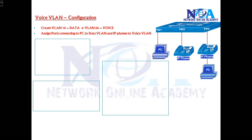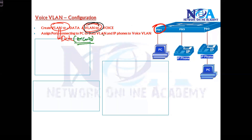To verify this voice VLAN configuration, I'll be using a simple topology with a PC — port number one, as you can see here. I'll be using two VLANs: VLAN 10 and VLAN 50. VLAN 10 will be acting as my data VLAN — you can say accounts department or any department you like.